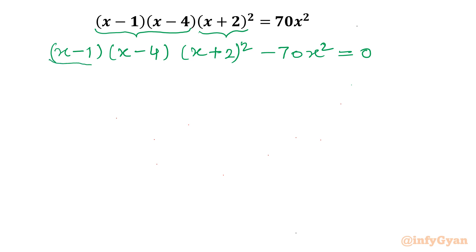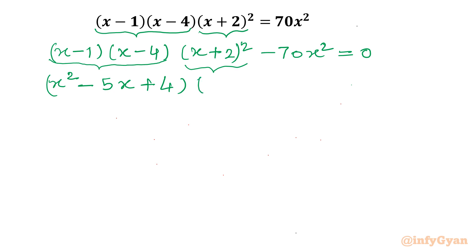Now let's take the product of these two brackets. I will write x² − 5x + 4 in this bracket. And let's consider the algebraic expansion for (x + 2)², which gives x² + 4x + 4, using the identity (a + b)² = a² + 2ab + b². Minus 70x² equals 0.